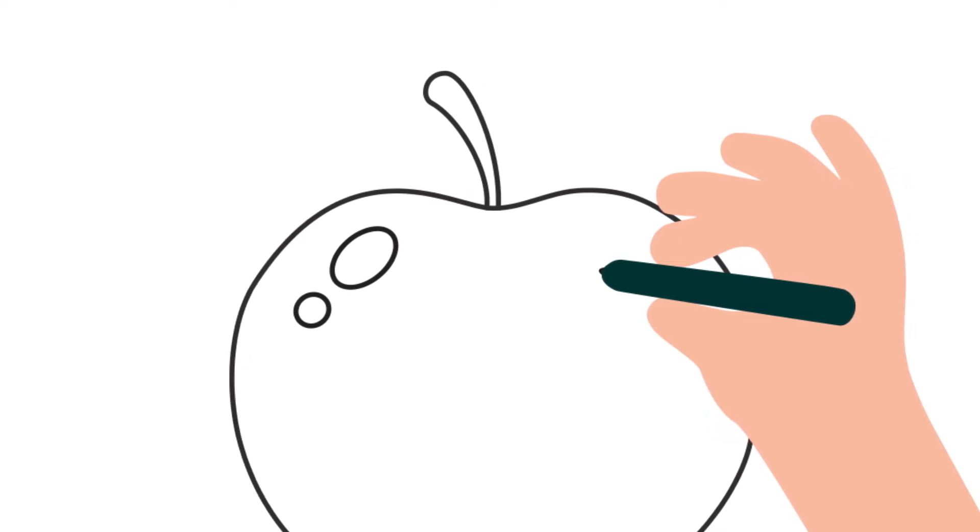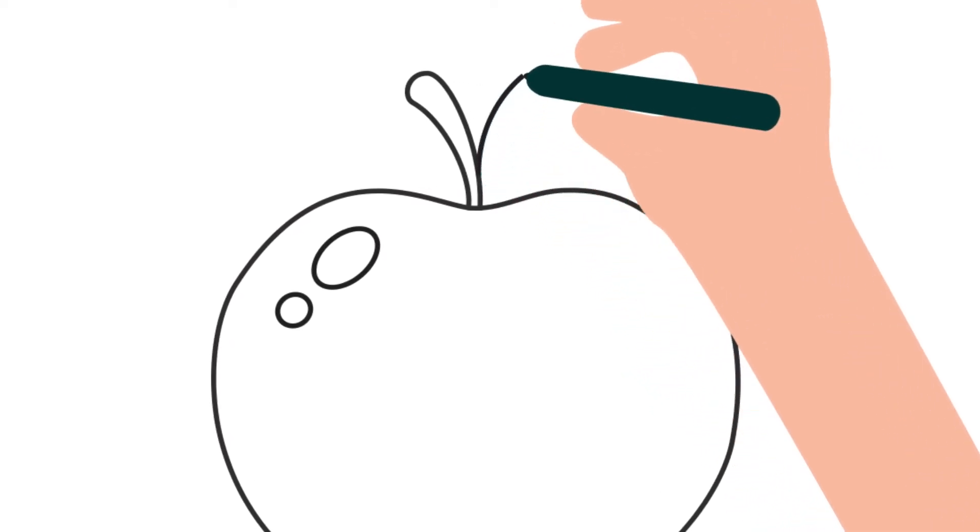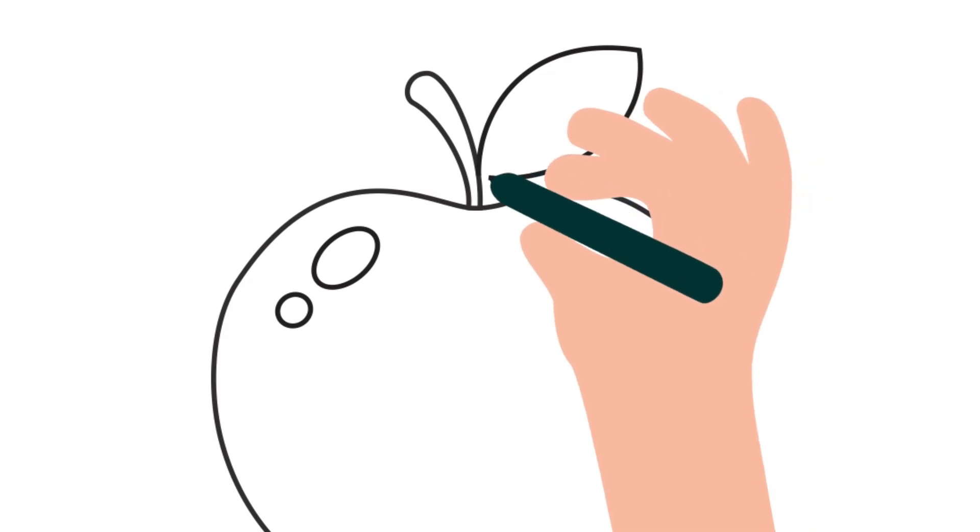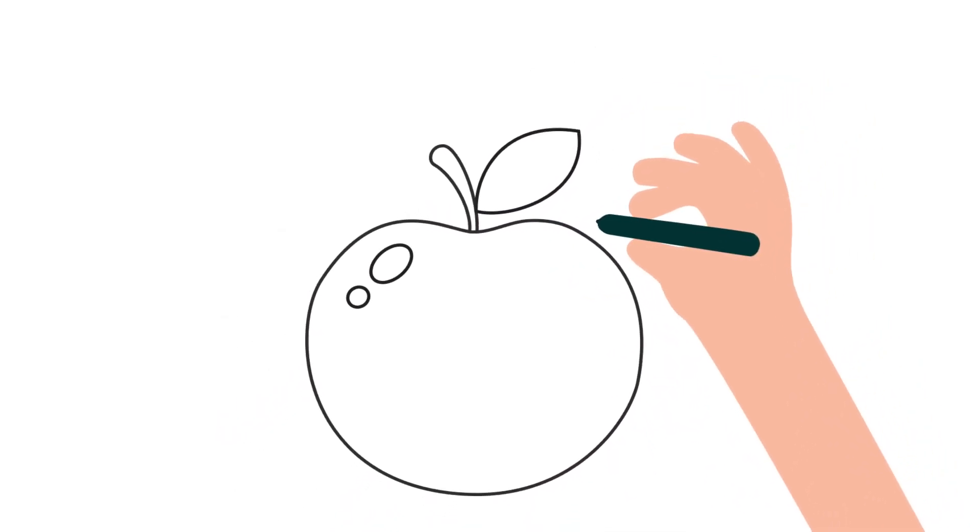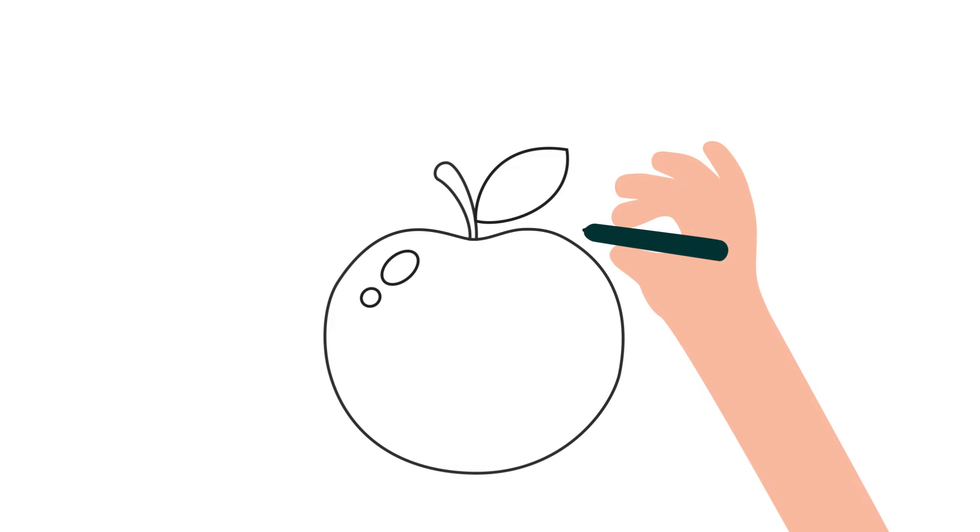Now one small addition, the leaves. Let's draw the leaf. Wow, this is really looking good. Now it's time to color this beautiful apple.